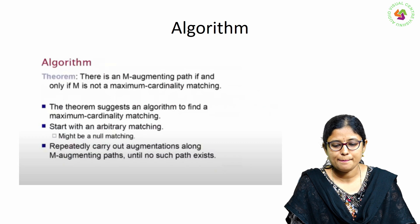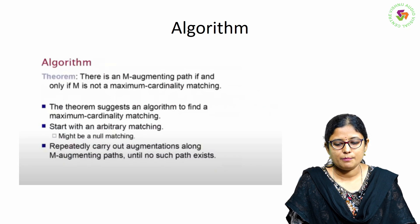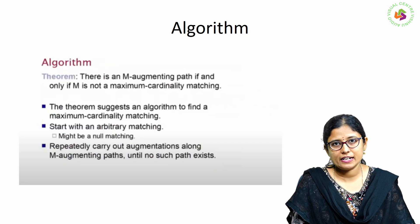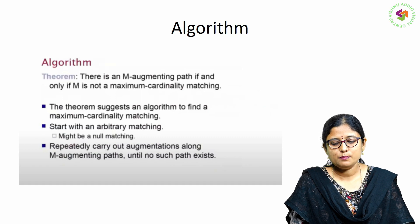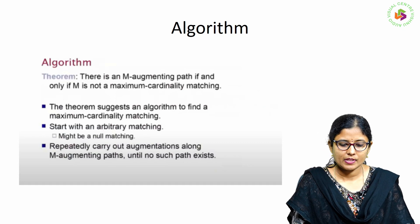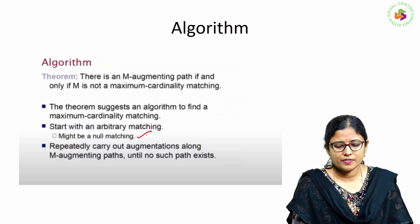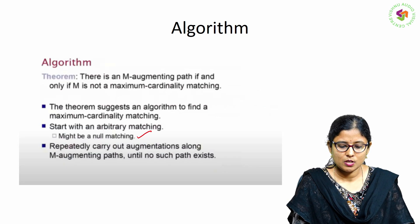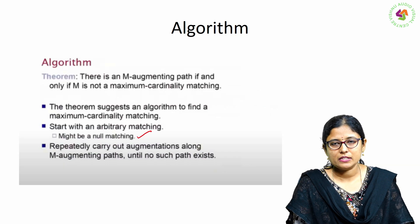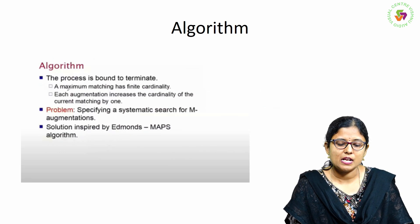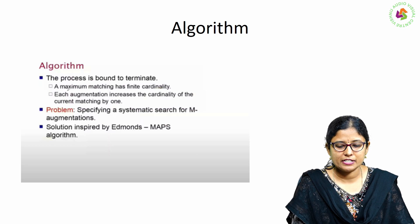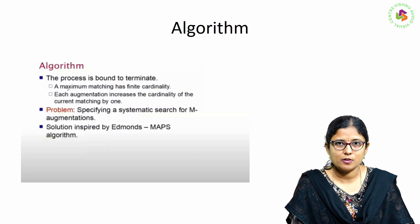The algorithm says: there is an M-augmenting path if and only if M is not a maximum cardinality matching. Which means that if there exists any augmenting path, we can add one more edge to the matching graph. The theorem suggests an algorithm to find a maximum cardinality matching: start with an arbitrary matching — it might be a null matching — then repeatedly find the augmenting path until no such path exists in the graph. The process is bound to terminate, since a maximum matching has finite cardinality, and each augmentation increases the cardinality of the current matching by 1.